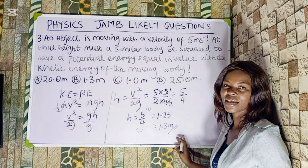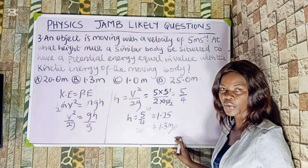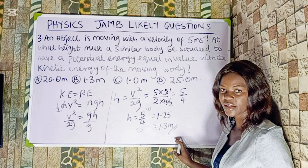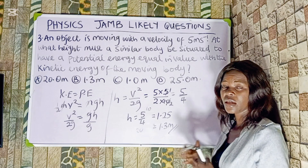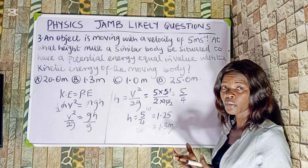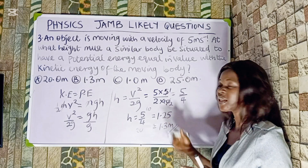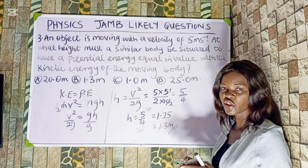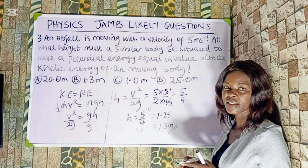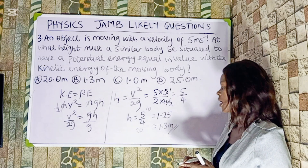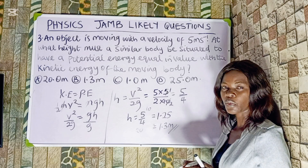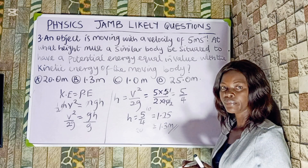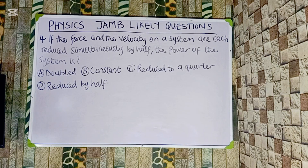The height at which potential energy equals kinetic energy is approximately 1.3 meters. Note that mass is not given because it cancels out — you only need to find the height. The correct option is B.